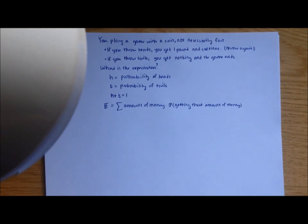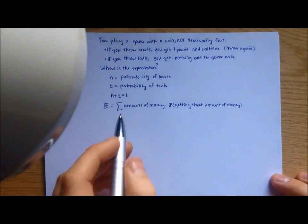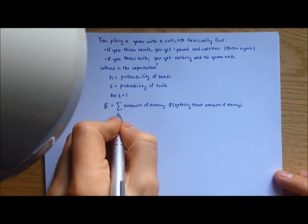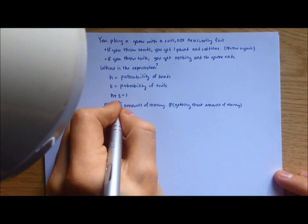So you can either get one pound, you can get two pounds, three pounds, four pounds. So in this case, I'm summing the amount of money from i equals zero to infinity.